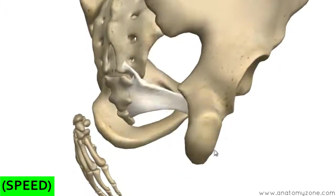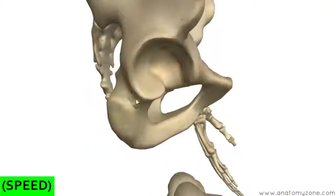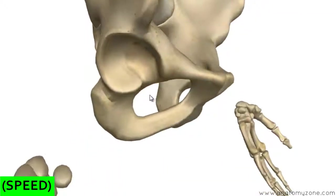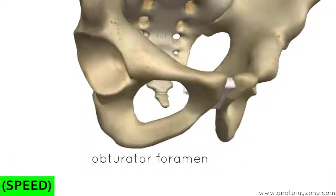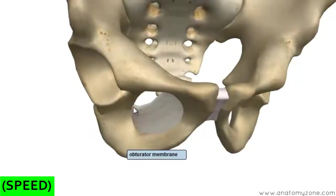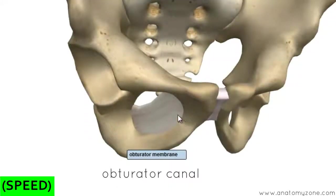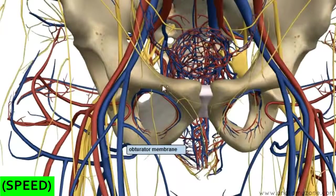You've got the ischial spine and ischial tuberosity. Rotating anteriorly, you've got the ramus of the ischium. This big hole is the obturator foramen, covered by a membrane, with a little gap above — the obturator canal — through which the obturator artery, vein, and nerve run.